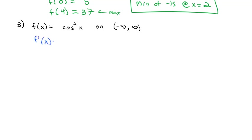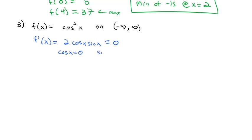First, f prime of x — the derivative. It's a chain rule, so we have 2 times cosine of x times the derivative of cosine, which is negative sine. We want to know when that derivative equals 0. It's already factored, so we just need cosine of x equals 0 and sine of x equals 0.